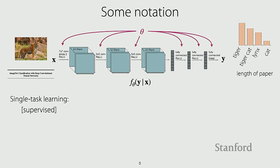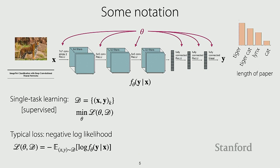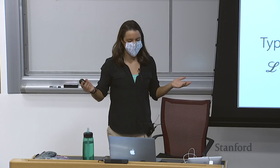In single task supervised learning, we'll be given a dataset with X-Y pairs and we want to minimize some loss function over that dataset as a function of the model parameters. A typical loss function might be negative log likelihood, where we want to minimize the negative log likelihood of the labels given the inputs. This means we want our model to be able to predict the labels given the input X. This should all be review, mostly getting on the same page with respect to notation.